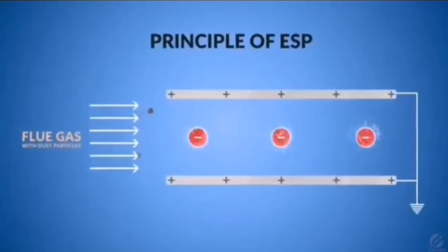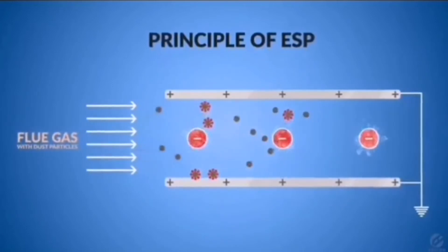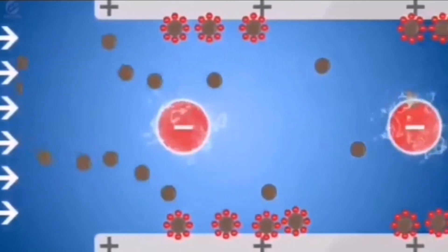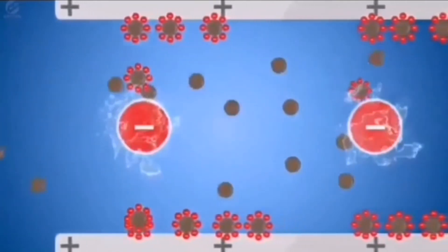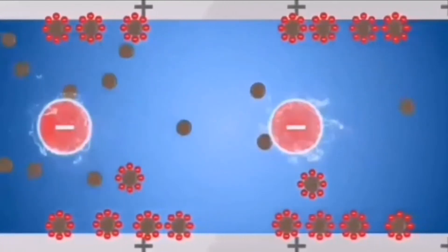When flue gas with dust particles is passed through a high voltage electrostatic field, electrons are released. The high voltage current is passed through the anodes. The leakage of current from the anodes is called corona.